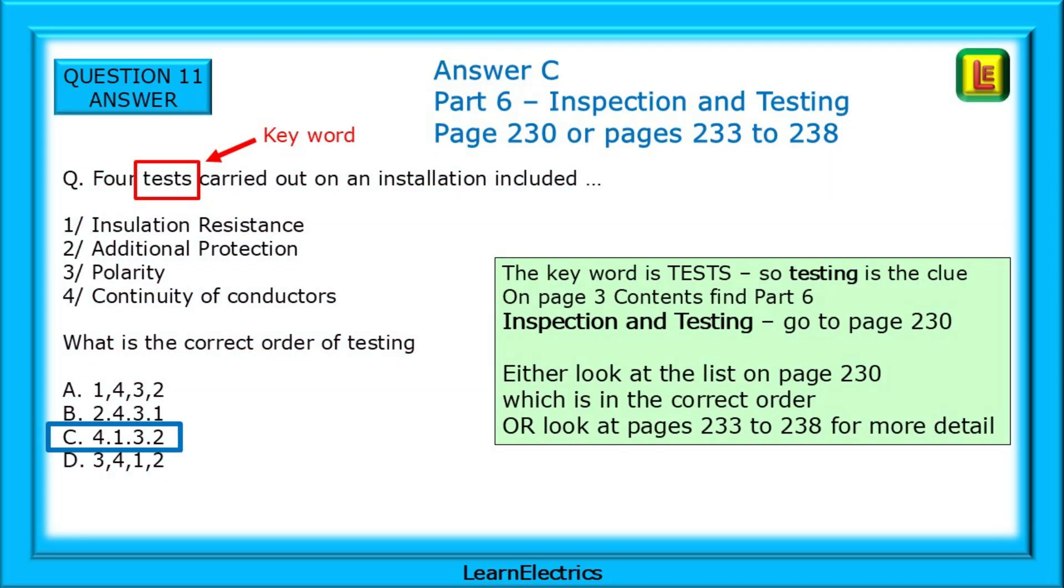The answer is C. The word is tests, so testing is the clue and on page 3 contents we can find part 6, inspection and testing, so go to page 230. Now, we can either look at the list on page 230, which is in the correct order, or we can look at pages 233 to 238 for more detail, which we don't really need. We've answered the question.